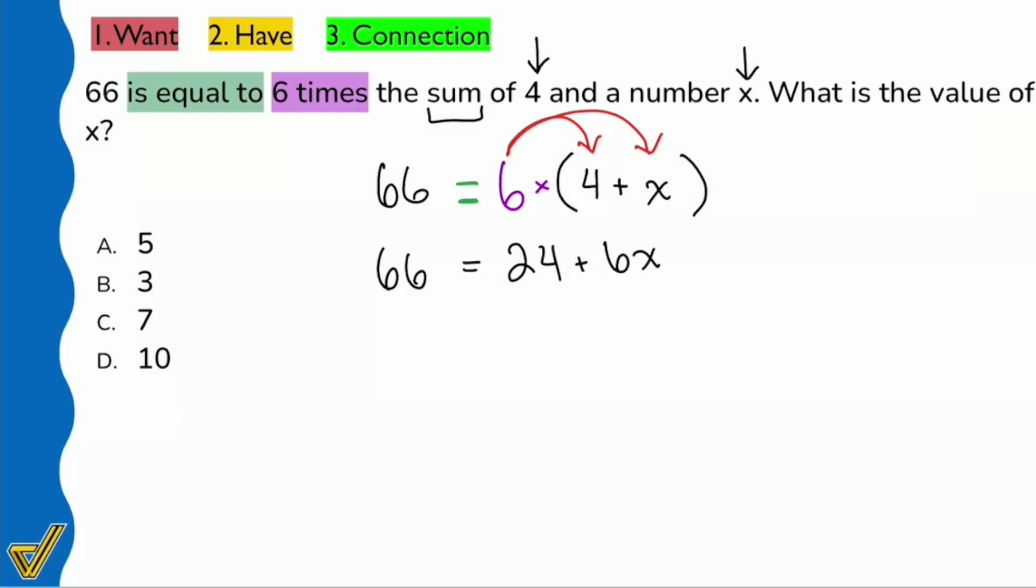Now this looks like an equation that's pretty straightforward to solve. First step, we're going to work backwards trying to get that x by itself. We have a 24 and a 6, so the 24 is the furthest thing away. We'll subtract 24 on both sides.